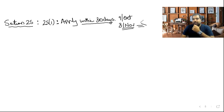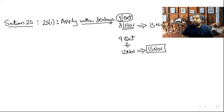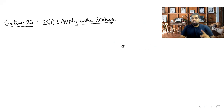Effective date concept: if you apply within 30 days and receive registration later (e.g., November 15), your effective date is still the original liability date (October 9th), so you get ITC from that earlier date. But if you delay beyond 30 days and get registration on November 15, your effective date is November 15 — meaning ITC only from that date.